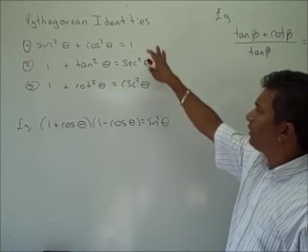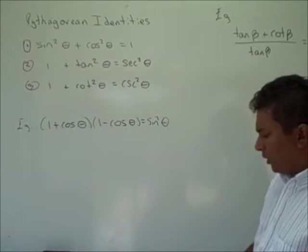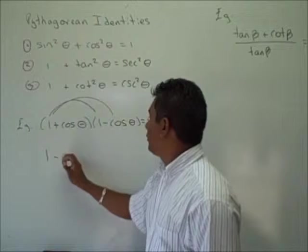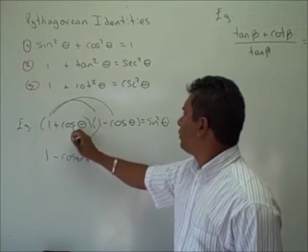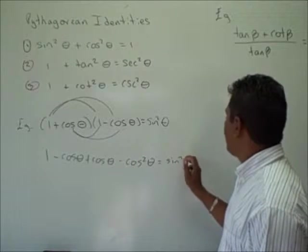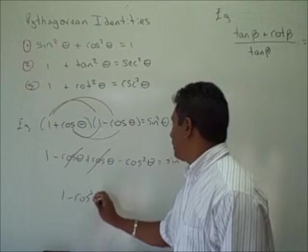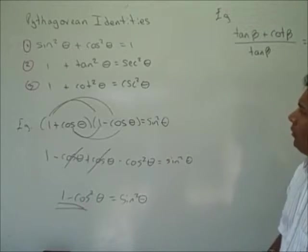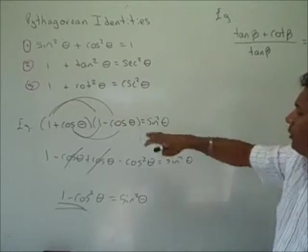In these two examples, we will use these three identities to prove that the left side of the equation equals the right side. In the first problem, we use the distributive property: 1 times negative cosine theta gives negative cosine theta; cosine theta times 1 gives positive cosine theta; and cosine theta times negative gives negative cosine squared theta. This is all equal to sine squared theta, completing the proof, since sine squared theta equals 1 minus cosine squared theta.